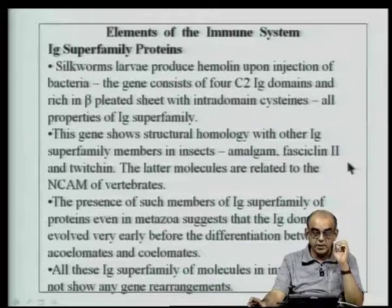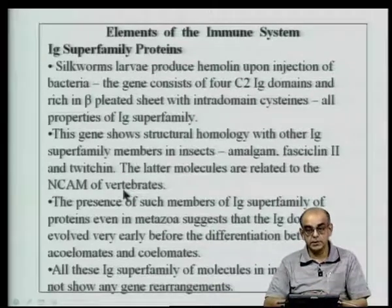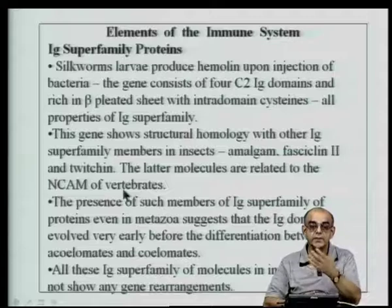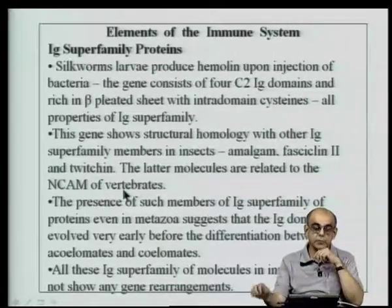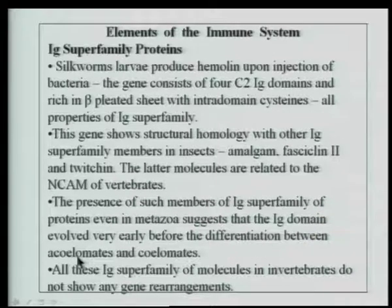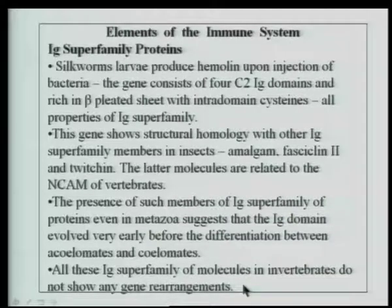This gene shows structural homology with other immunoglobulin superfamily members in insects, such as amalgam, fasciclin 2, and twitchin. The neural cell adhesion molecules of vertebrates demonstrate connections between these protein molecules, suggesting that many cell adhesion molecules playing a role in lymphocyte trafficking to lymph nodes actually arose very early in evolution. The presence of such members even in metazoa suggests that the immunoglobulin domain evolved very early, before the differentiation between acoelomates and coelomates.